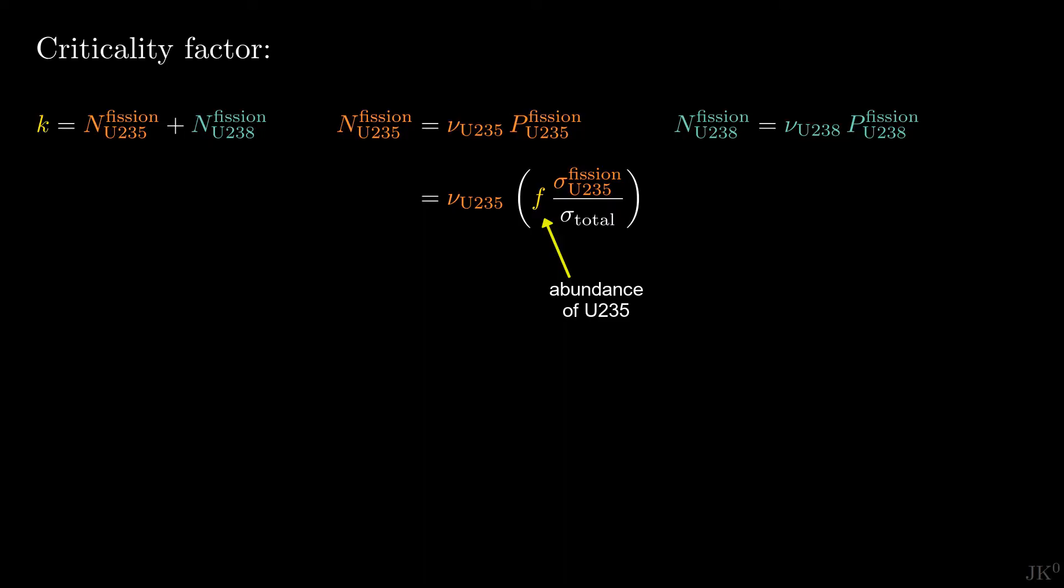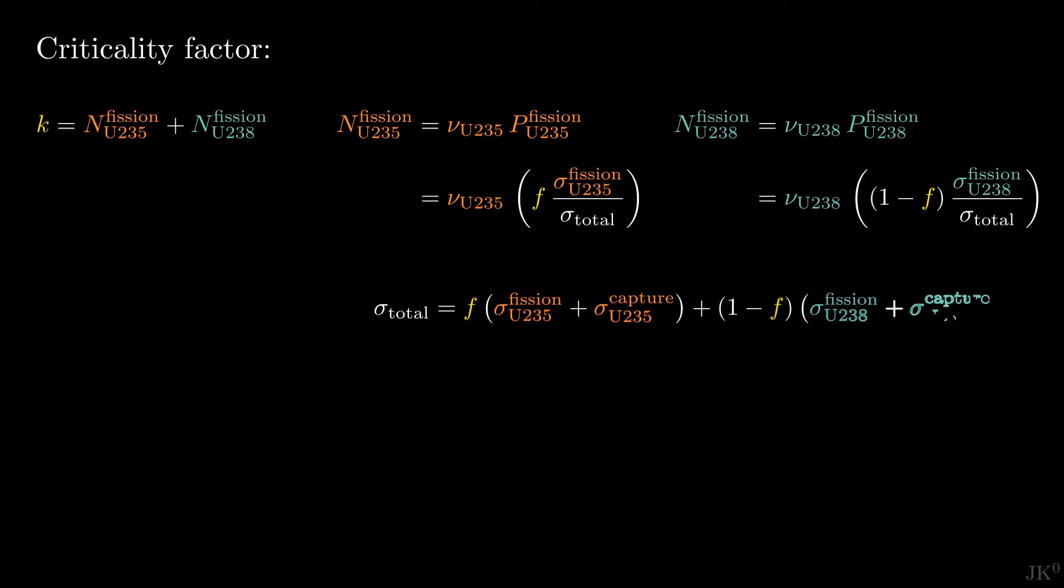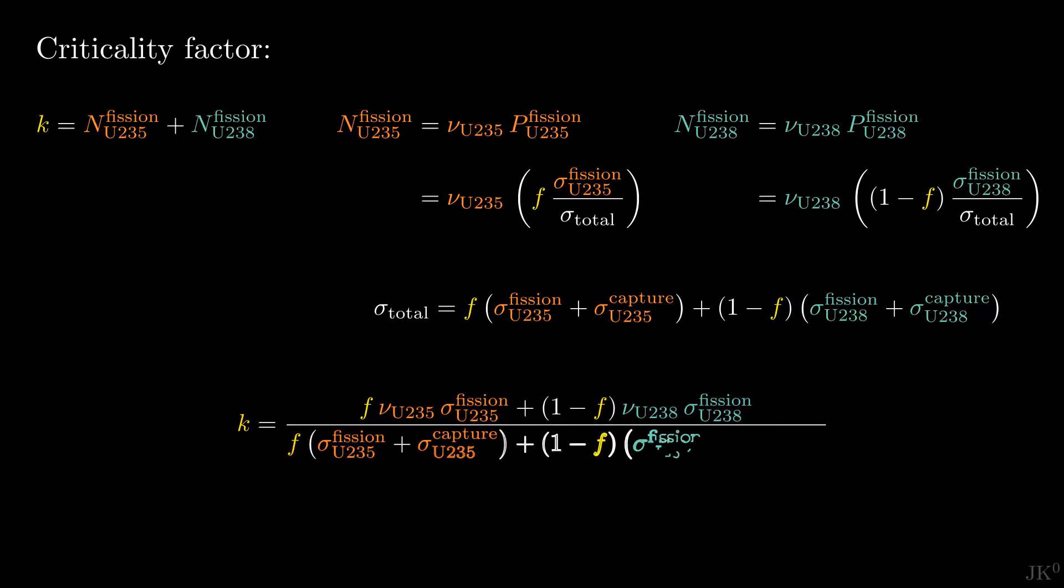Remember that for U235 the abundance is f and for U238 is 1-f. The total cross-section, sigma total, for something to happen is given by the individual cross-sections for both fission and capture, weighted by the relative abundance. Putting all this together, we obtain a general expression for the criticality factor as a function of the uranium enrichment f.